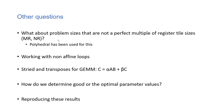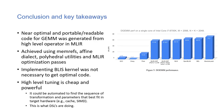Open questions include how to determine good and optimal parameter values — I would suggest using deep learning or a search method to find them. The conclusions and takeaways from this paper are: near-optimal, portable, readable code for GEMM was generated from high-level operators in MLIR using memrefs, affine dialects, polyhedral utilities, and MLIR optimization passes. It was shown that having an inner BLIS kernel is not necessary for optimal code, though it can be used if needed. High-level tuning is cheap, powerful, and fast — and you can get to optimal code either manually or automatically, as DSLs are already doing. Thank you.